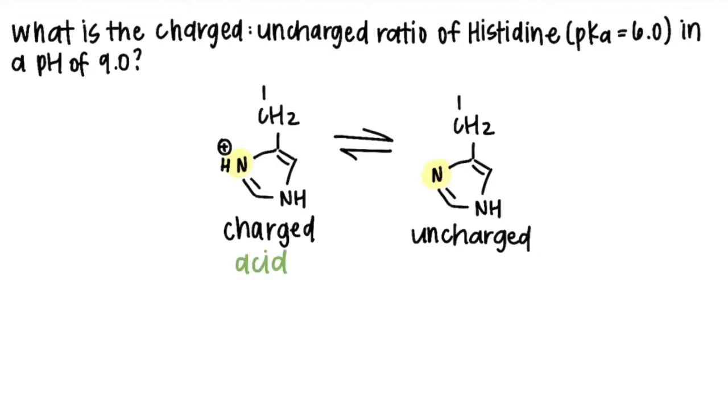The definition of a Bronsted-Lowry base is that it accepts protons, so the structure on the right is going to be in the base form because it doesn't have that proton and it is able to accept one at that nitrogen.